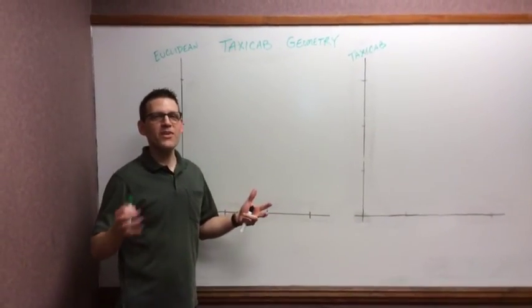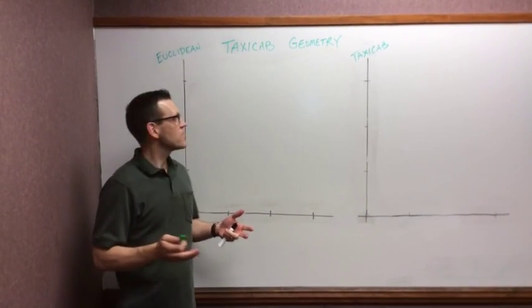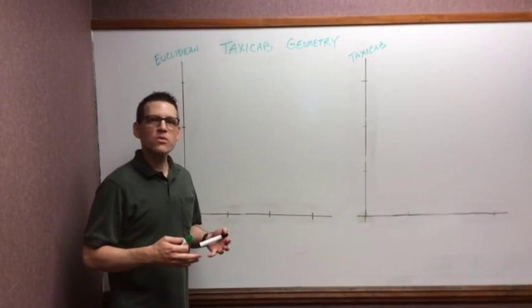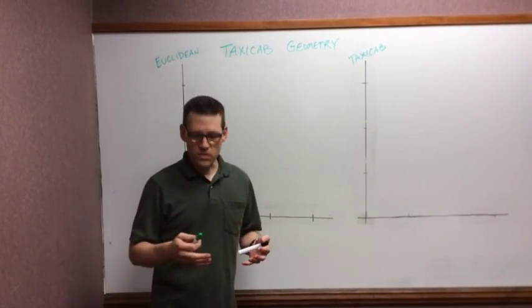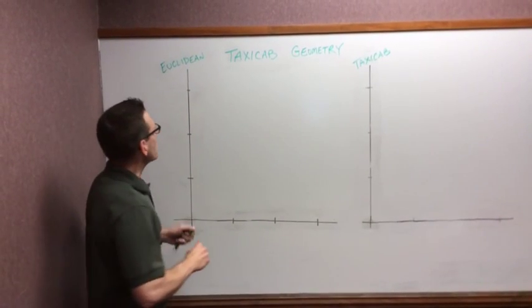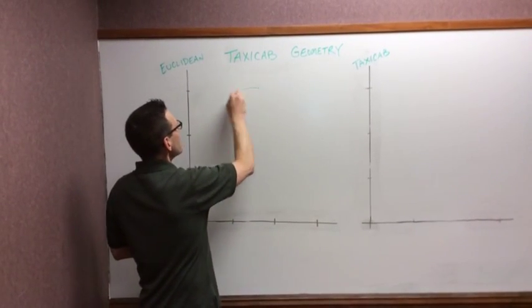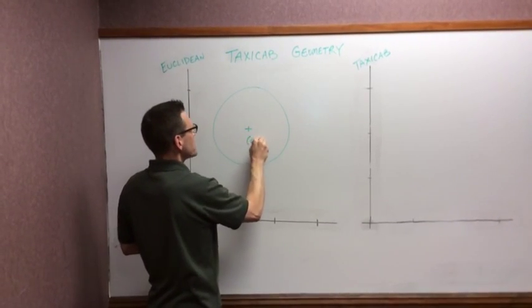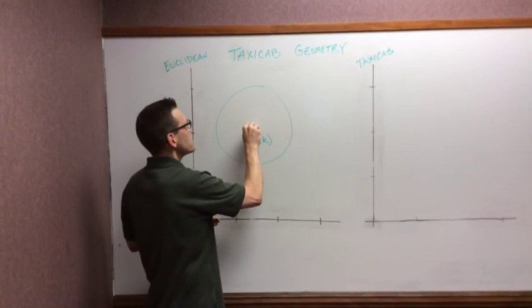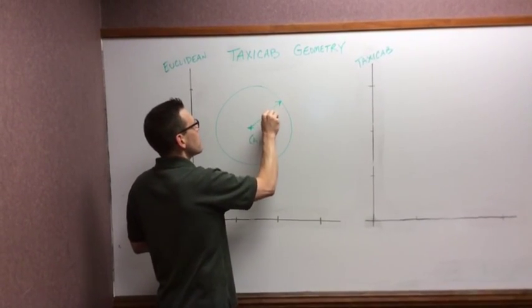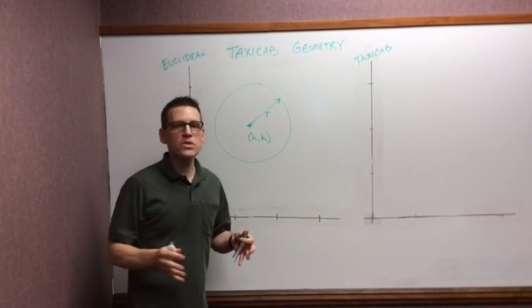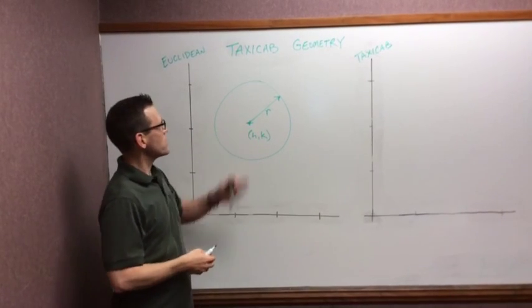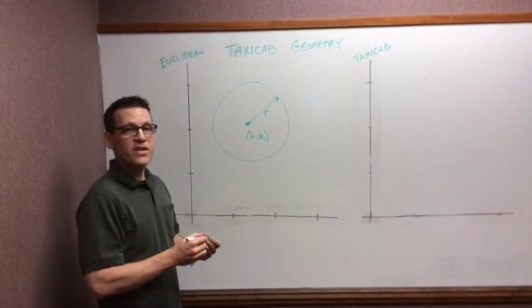So now that we've redefined distance in the Taxi Cab world versus the Euclidean world, let's look at a pretty surprising result when we look at one of our familiar shapes, the circle. Let's start over in the Euclidean planar world. A circle centers at point (h, k). It's going to also have a radius of r. Recall that the circle is a collection of points equidistant from a given point, which we're calling the center. So distance is heavily involved in that definition.